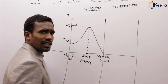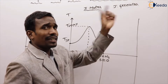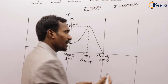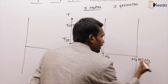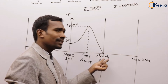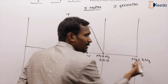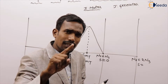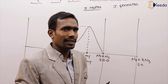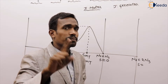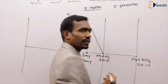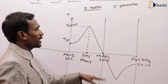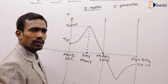Next, for induction generator mode: the induction generator speed is greater than synchronous speed. For example, if nr equals 2ns, then using the slip formula s = (ns − nr) / ns, we get s = (ns − 2ns) / ns = −1. The torque-slip characteristics for the induction generator are just the reverse of those for the induction motor.